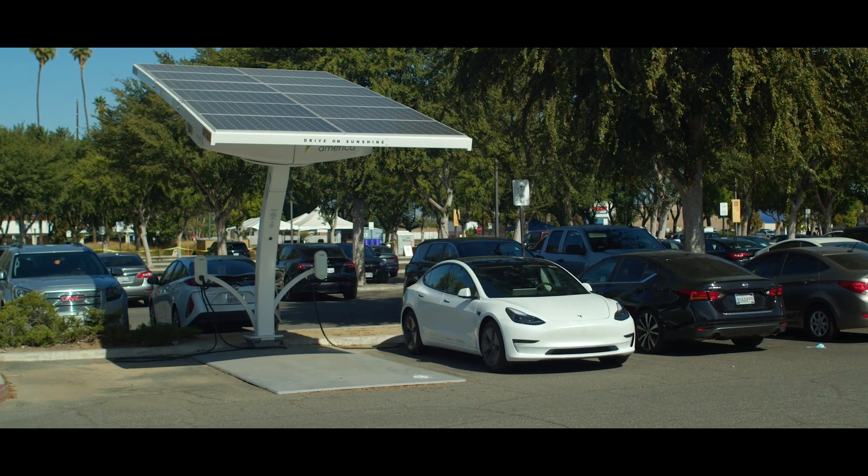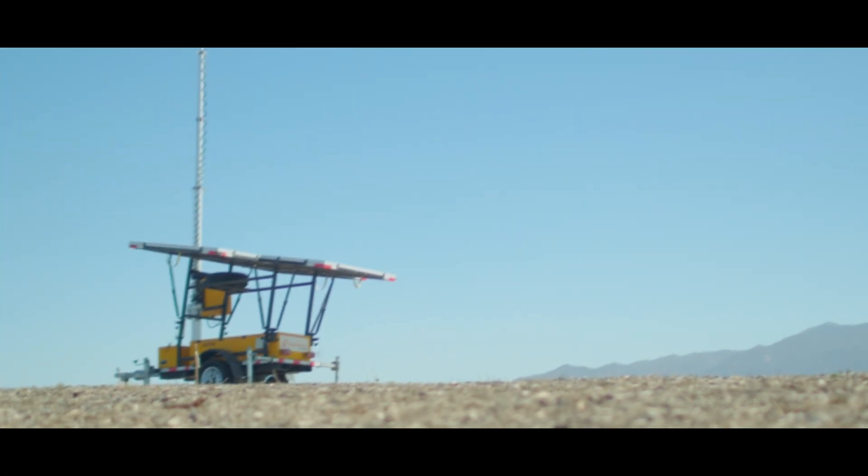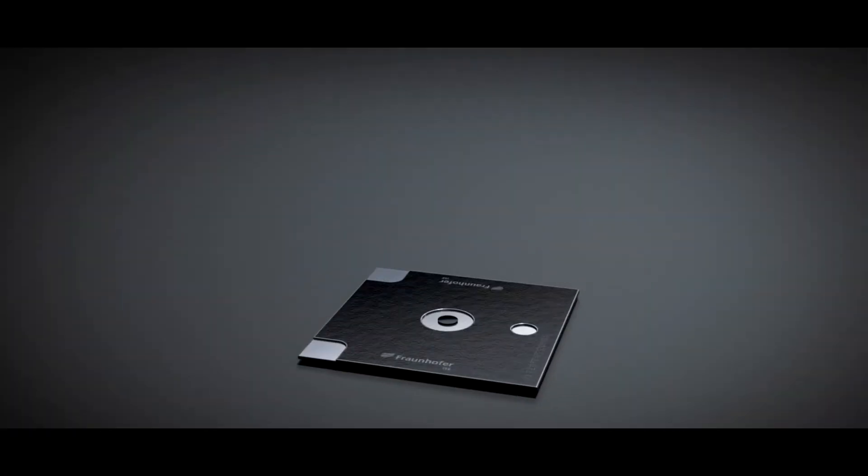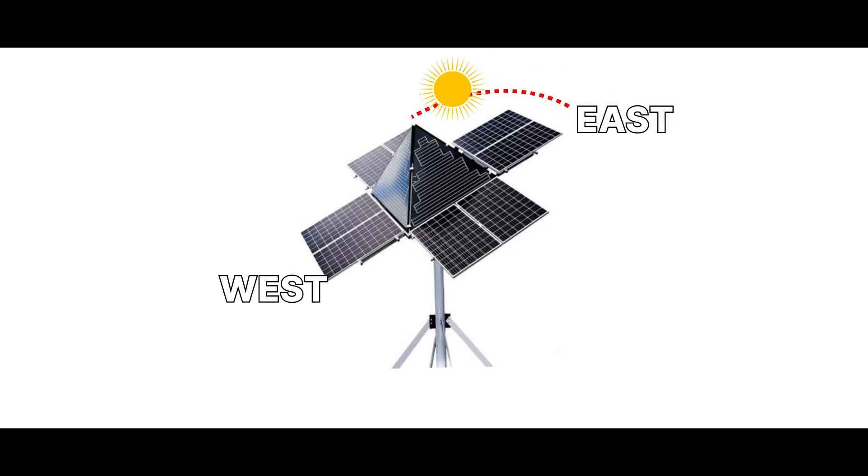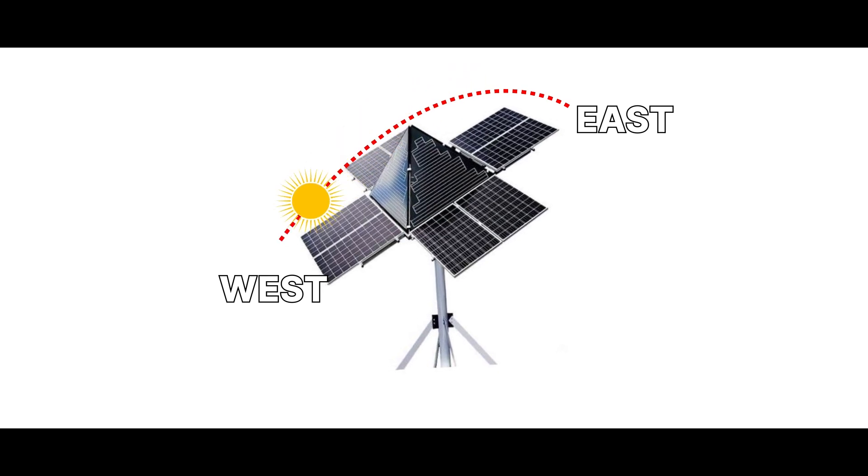However, the system does not have to be placed on a fixed station or at the optimal sun orientation. The solar concentrator constantly adjusts its orientation based on measurement data to maintain the optimum angle to the sun.